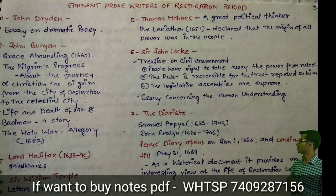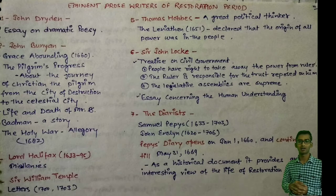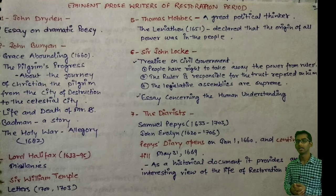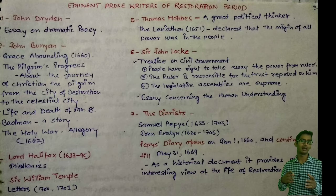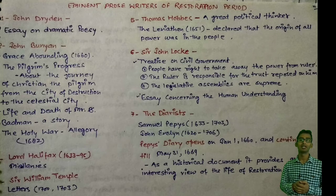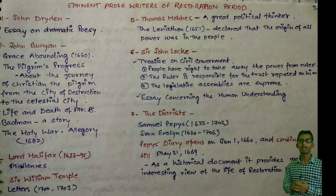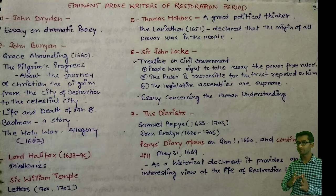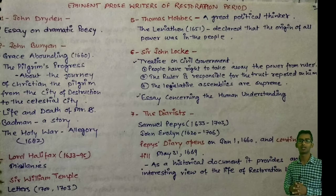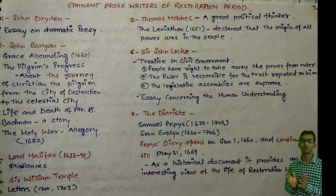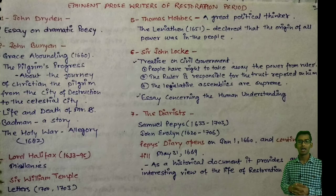Next, Thomas Hobbes — he was a great political thinker of the age. Because they were using prose as the medium of conveying their thoughts, they also helped English literature to develop. His work was Leviathan, published in 1651. He declared that the origin of all power is in the people — so the idea of democracy can be taken from Leviathan, 1651.